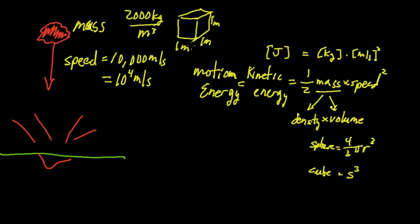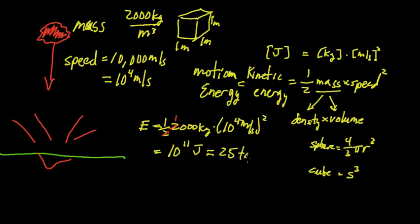We have a 1 meter cube rock, so it has 2,000 kilograms. It's going at 10,000 meters per second. So then the energy that we're dealing with is one half 2,000 kilograms times 10 to the 4 meters per second squared. The 2 here cancels with the 2, so we'll just get 1 there. We get 1,000, so that's 10 to the 3. This is 10 to the 4 squared, so that's 10 to the 8. And then 10 to the 3 gives me 10 to the 11 joules. If we compare this to an amount of energy, we find that this is equivalent to about 25 tons of dynamite.